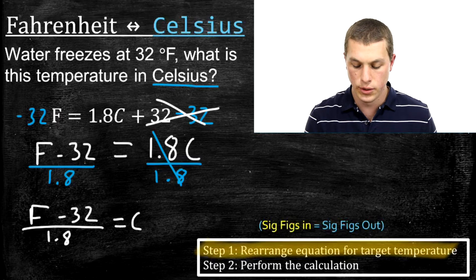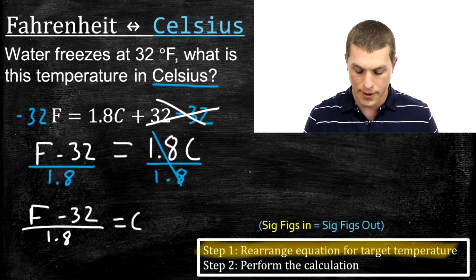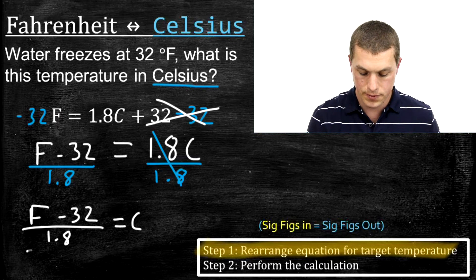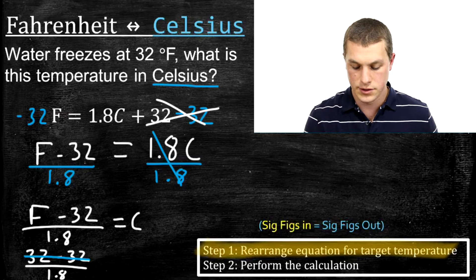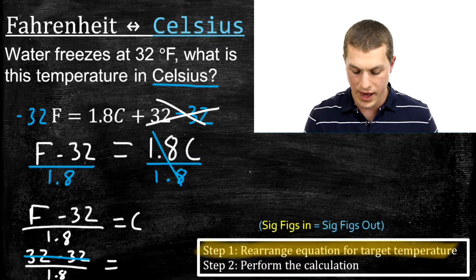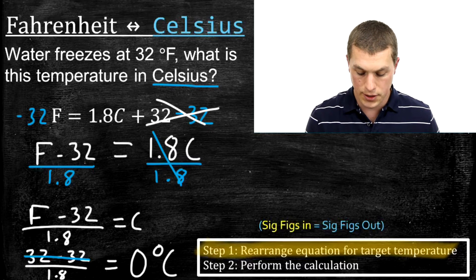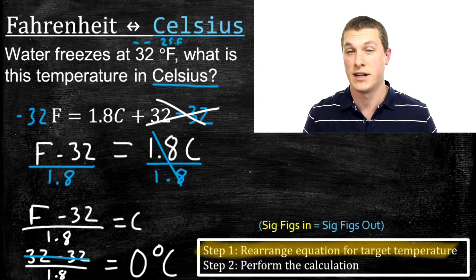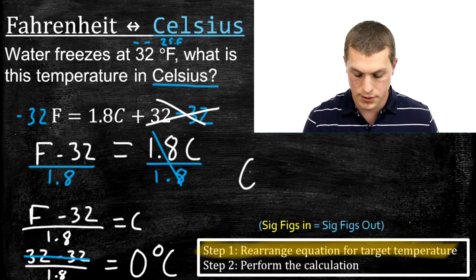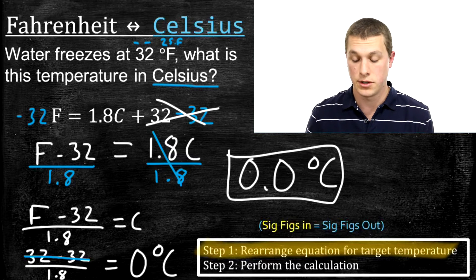Now we plug in 32 for Fahrenheit. We get (32 minus 32) over 1.8, and 32 minus 32 is zero, so we get zero degrees Celsius. For significant figures, the input 32 degrees Fahrenheit has two sig figs, so our answer should have two sig figs. Instead of writing zero, we write 0.0 — that gives two sig figs. Water freezes at 32°F or 0.0°C.